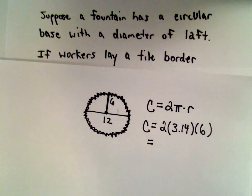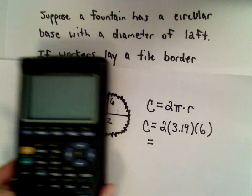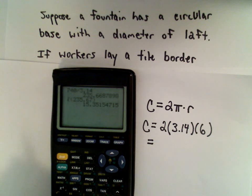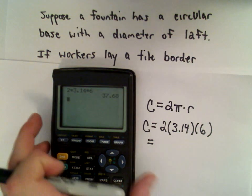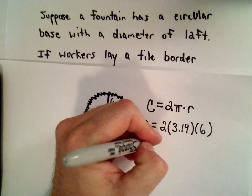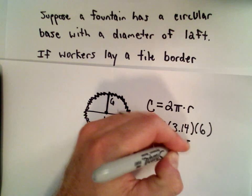So now it's just a matter of multiplying. I'm going to use my calculator here. So I'm going to take 2 and multiply that by 3.14, and I'm going to multiply that by 6. I'm getting 37.68.